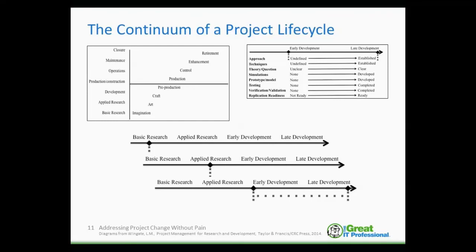Proper assessment of where a project falls as a whole, and then its component parts, is going to be really important. In the top-left model, the lifecycle flows from basic research through to closure. In the middle of that box is a progression from imagination — where one is trying to understand the realm of the possible — to art where one is creating, to craft where one is building, through production where the final product becomes operational, and then eventually retired.